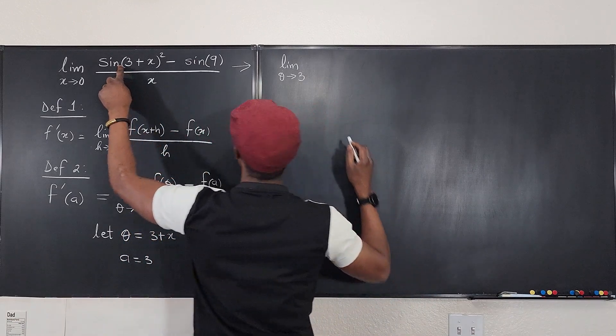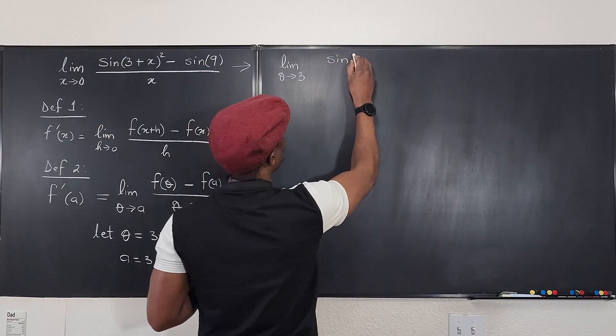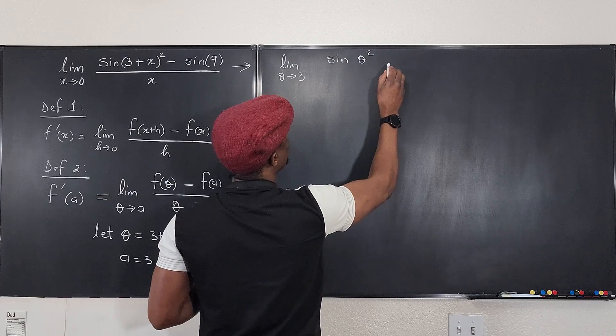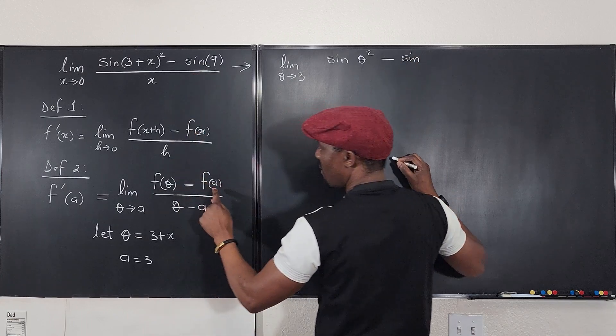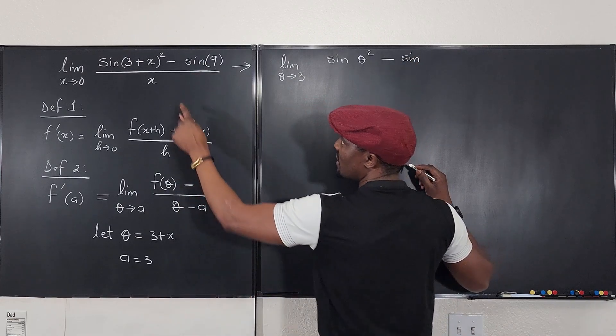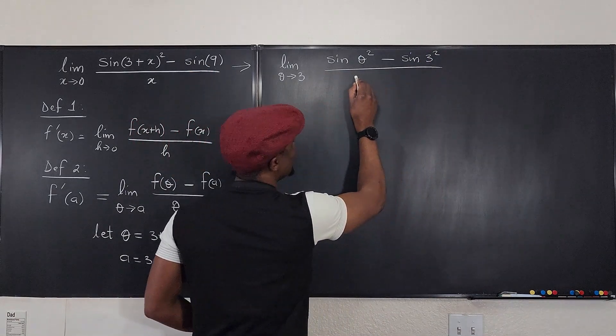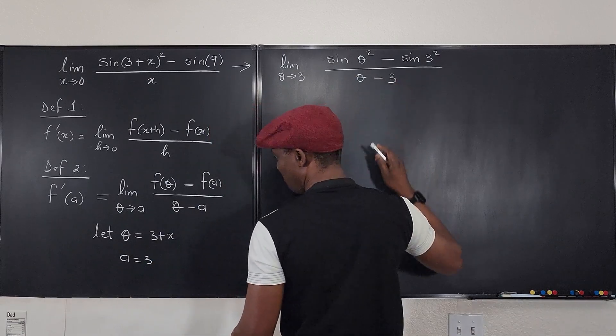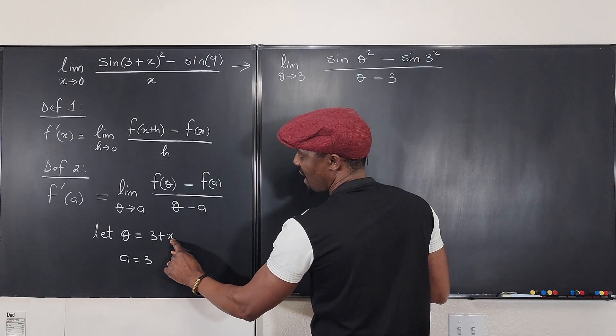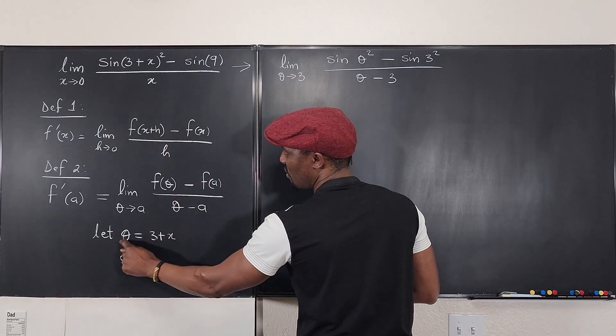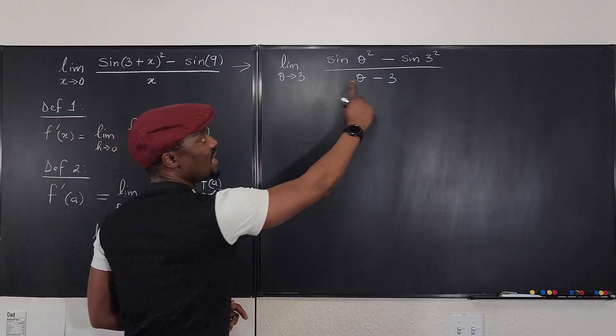which is going to be f of theta. But we know the function is sine. So it's going to be sine of theta squared minus the sine of f of a. The function is the square, which is sine of 3 squared. You see that? Divided by theta minus 3. Theta minus 3 because our a is 3. And you can always see that when you replace x in this function, you move 3 over here. It's going to be theta minus 3. So we have seen that this is what we're talking about in this case.